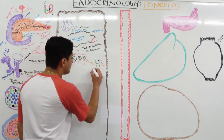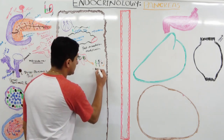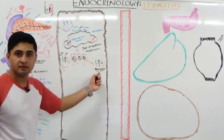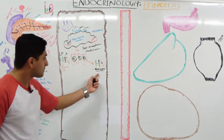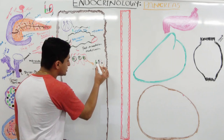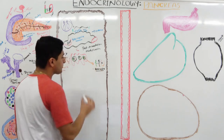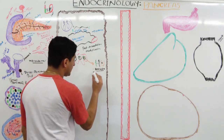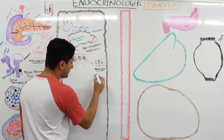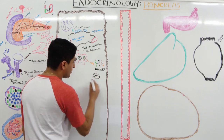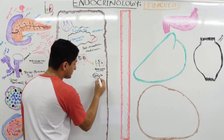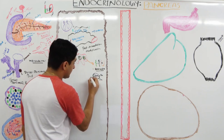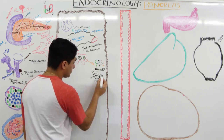This machinery also produces something called amylin — remember that. Also, insulin in the granules is bound to zinc; about 6 insulin molecules are bound to one zinc atom.